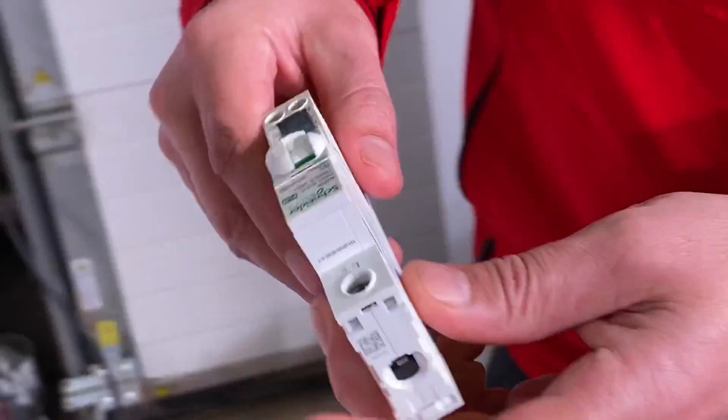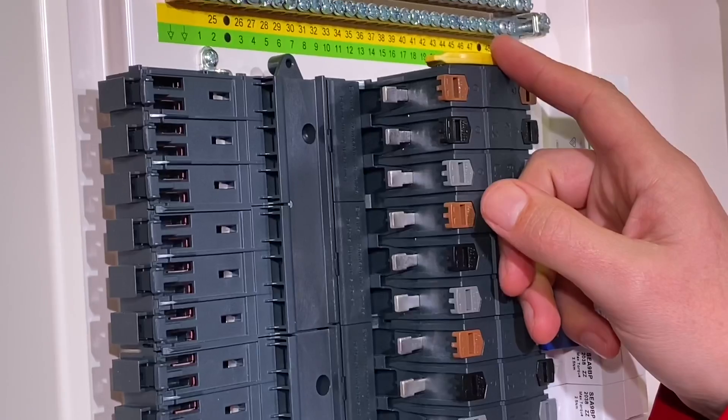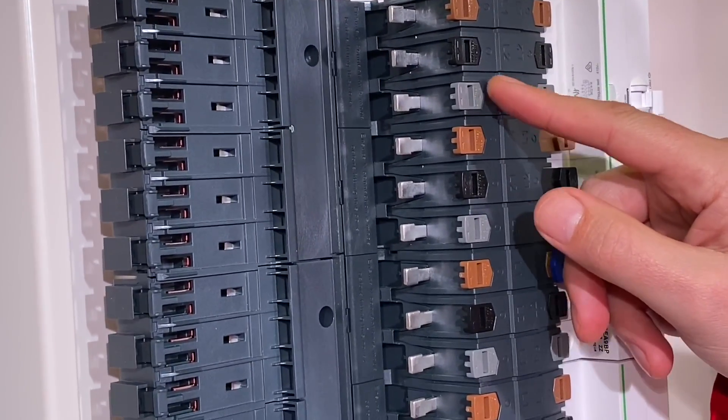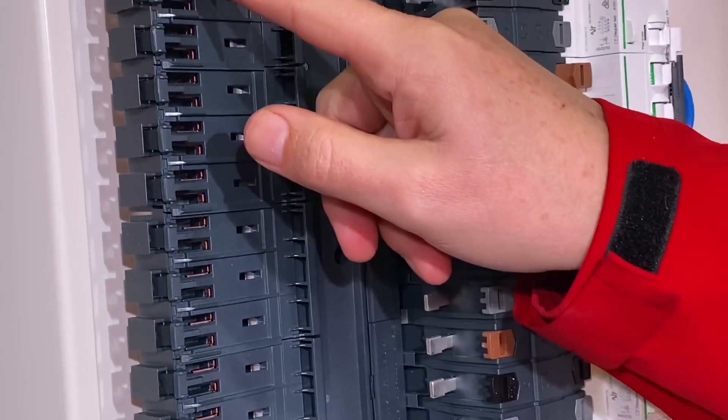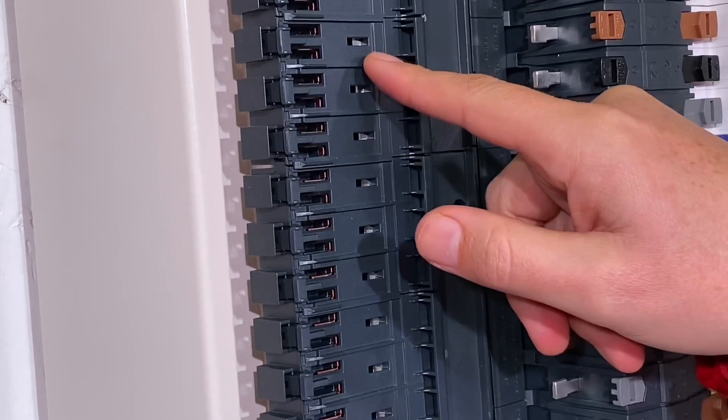And where do they go in the distribution boards themselves then? So this is the Acti9 board. Loads of great safety features in there. If you haven't seen the Isobar function, here it is and we'll demonstrate that a little bit further as we go on. It's been around for some time but here's the new plug-on neutral function. The neutral goes in there and the other one for the functional earth. Simply just clips in there.